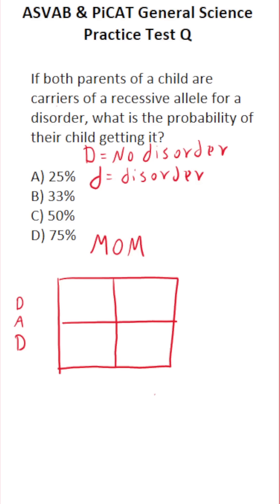This general science practice test question for the ASVAB and PyCat says: If both parents of a child are carriers of a recessive allele for a disorder, what is the probability of their child getting it? We're going to use what's called a Punnett square to solve it — something you've probably used at some point in your biology class.